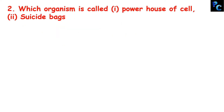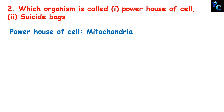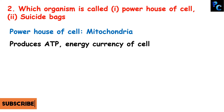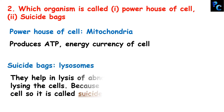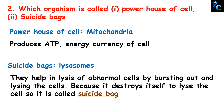The next question: which organelle is called the powerhouse of the cell, and second, the suicide bag? Mitochondria is the powerhouse of the cell because it generates ATP, the energy currency of the cell. Lysosomes are called the suicide bag because they help in the lysis of abnormal cells by bursting out and lysing the cell — it destroys itself to lyse the cell, so it is called suicide bag.